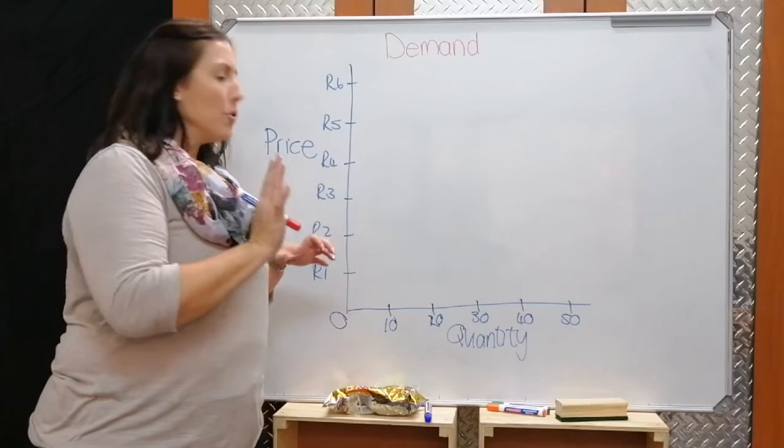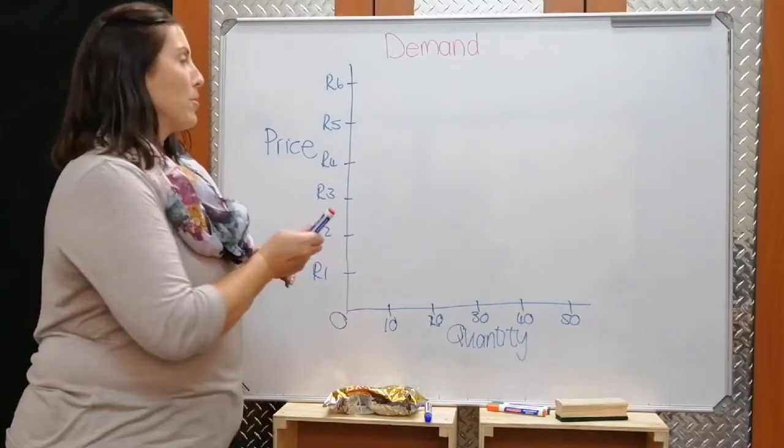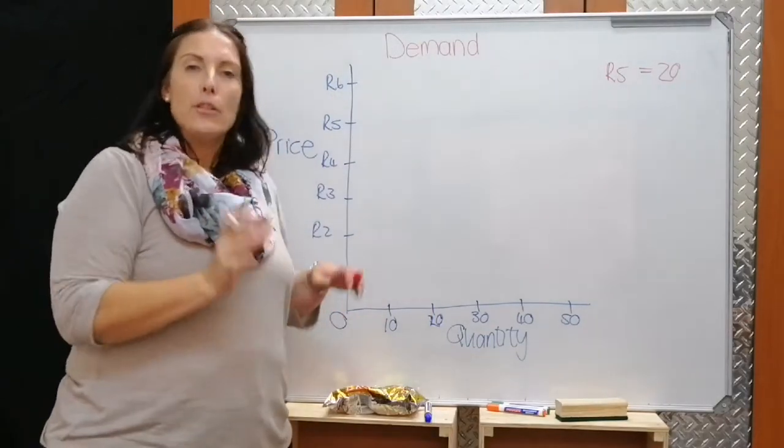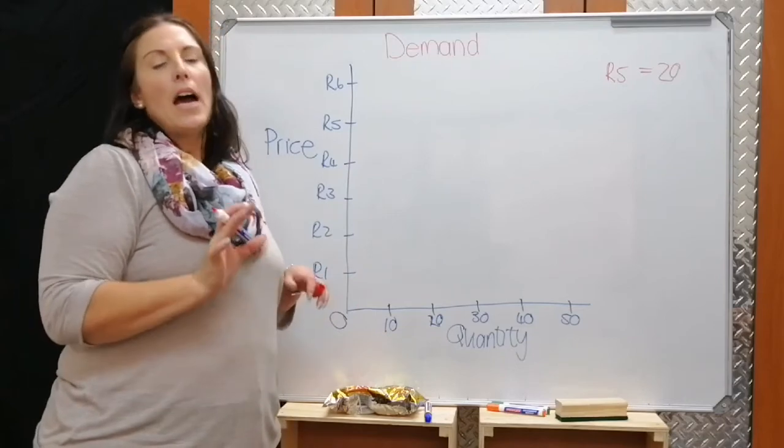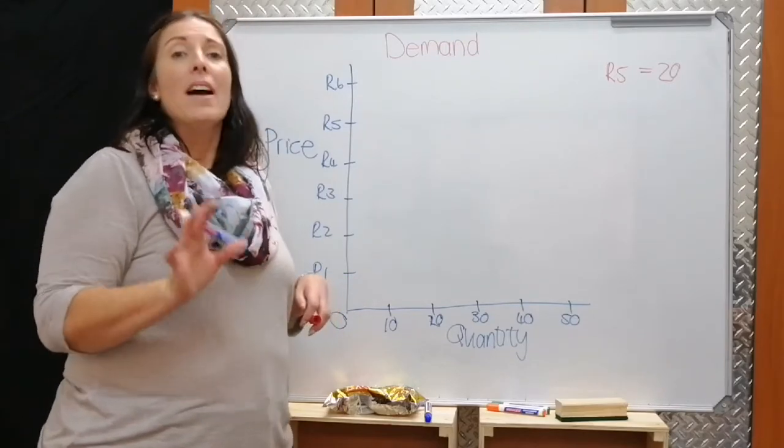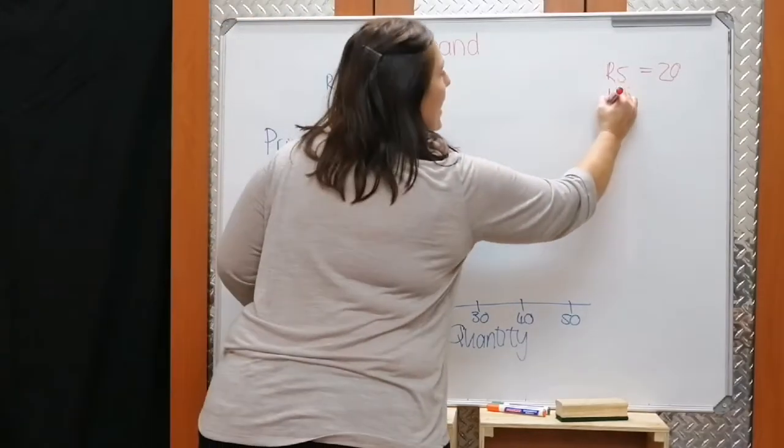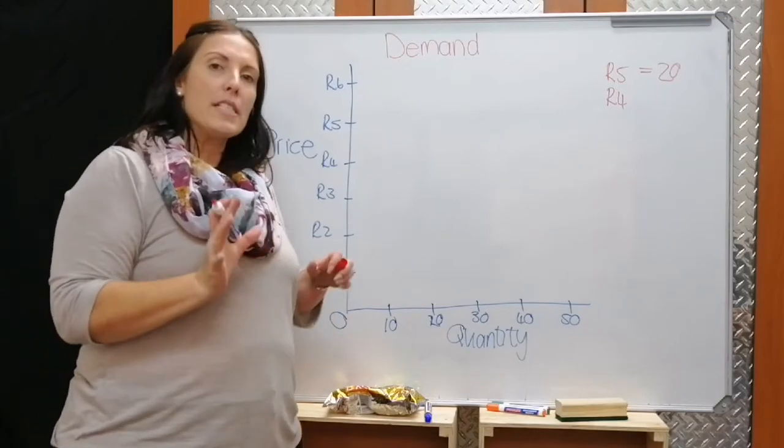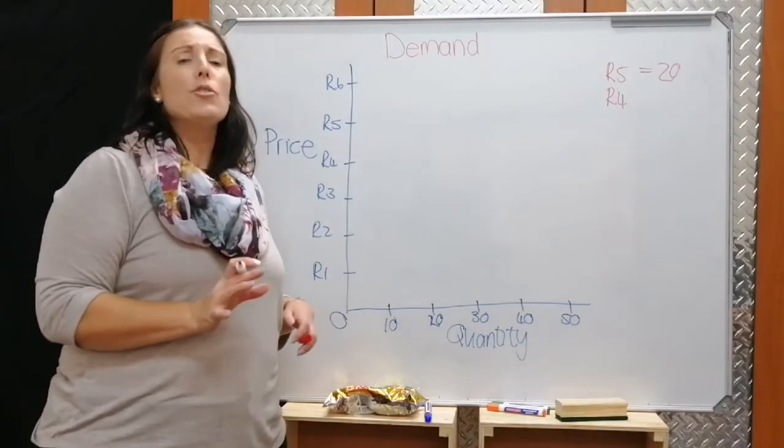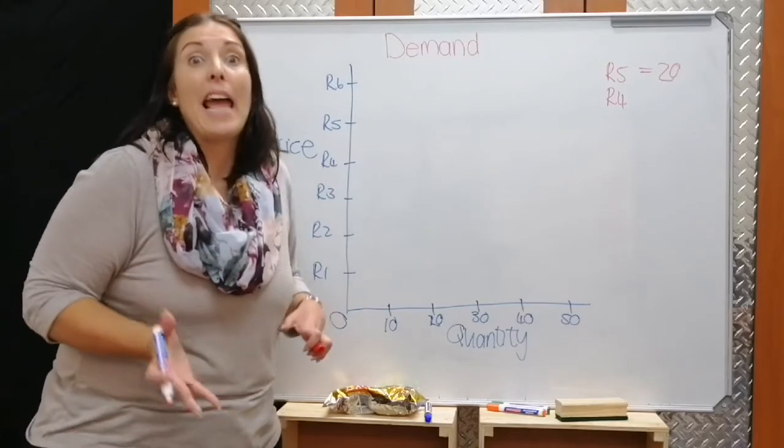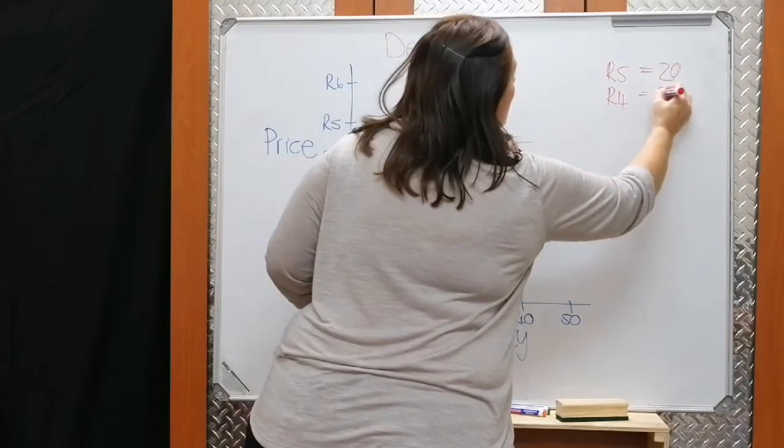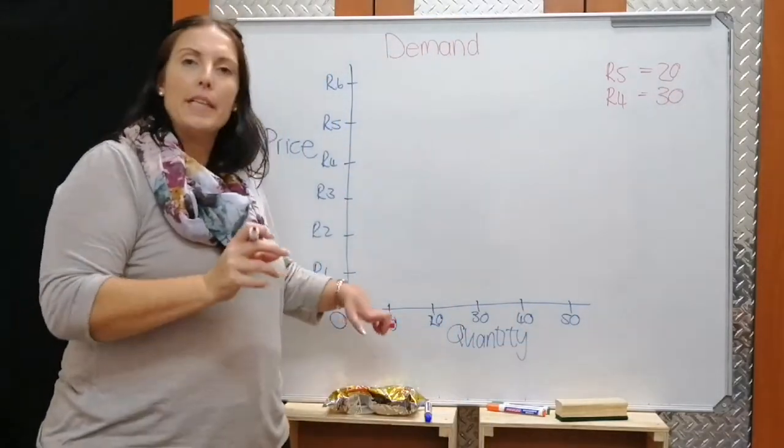In a class of 30 students, at 5 rand, 20 students are willing to pay 5 rand for a packet of Twiggle chips. Now let's say I make it cheaper and sell it at 4 rand. What do you think is going to happen? Do you think we'll still only have 20 students buying? No, definitely not. Some students who previously thought it was expensive or didn't have 5 rand, now at 4 rand, are prepared to buy. Let's say the whole class will now buy. So at 4 rand, 30 students are demanding a packet of chips.